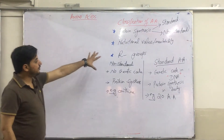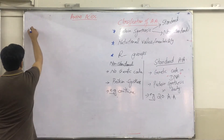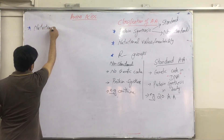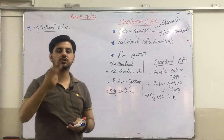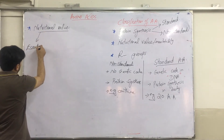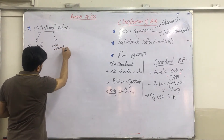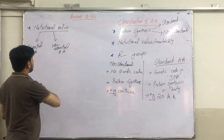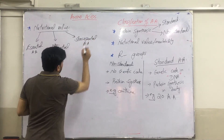The second category is the classification on the basis of nutritional value. Now, on the basis of nutritional value, in older books you will find two classifications. But according to the new classification, there is another class on the basis of their nutritional value — that is semi-essential amino acids.